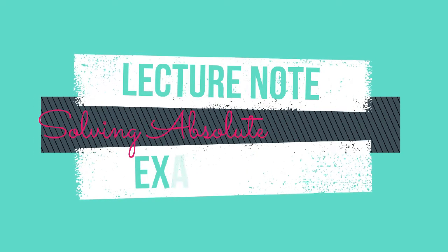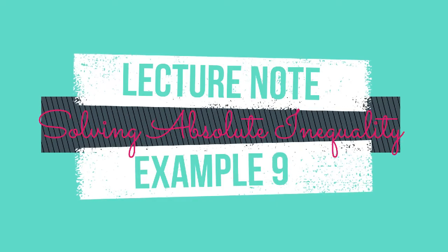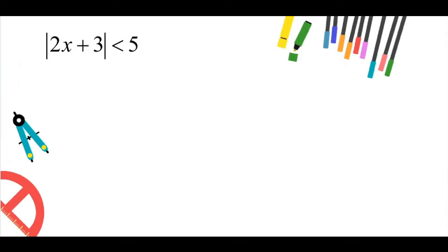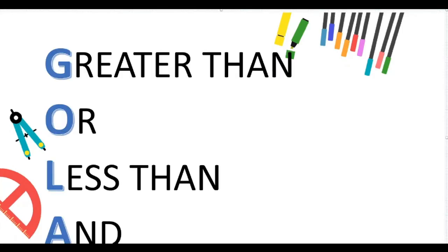In this video we're going to look at example 9a in your lecture notes: solve the absolute inequality 2x plus 3 less than 5. In order to solve this inequality we have to use basic definitions since it involves only one modulus. From the previous video we know that we use the GOLA method to represent the basic definitions of absolute inequalities.